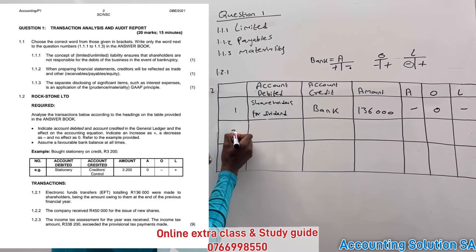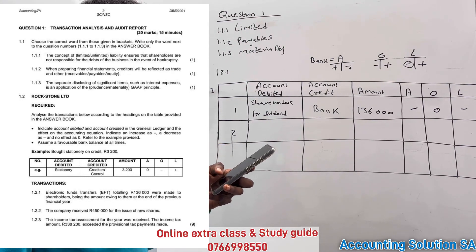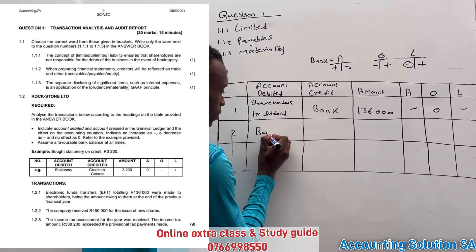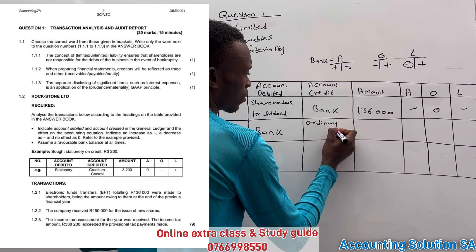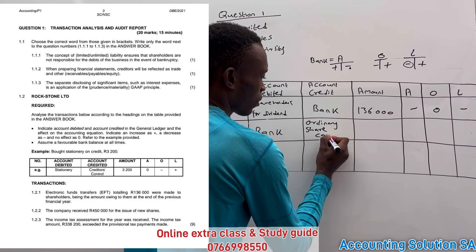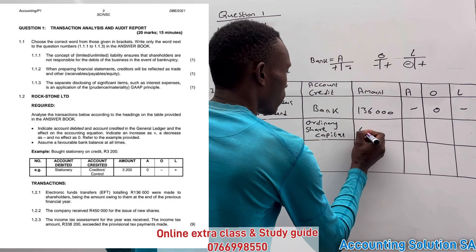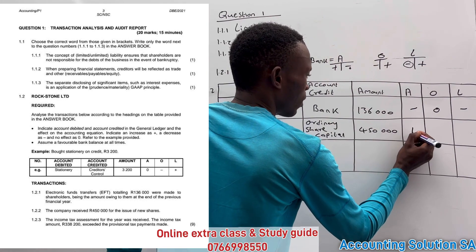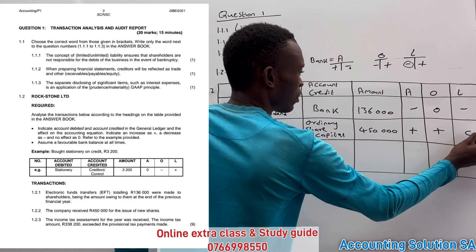Number two: the company received 450,000 for the issue of new shares. This means we receive cash — bank is increased. We credit ordinary share capital for 450,000. The bank is affected by a plus, and owner's equity of the shareholder is affected by a plus. The liability side is unchanged.